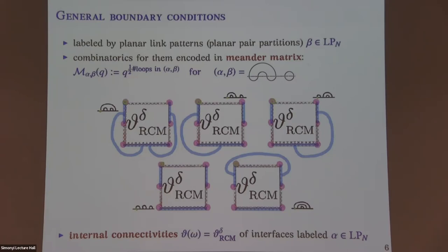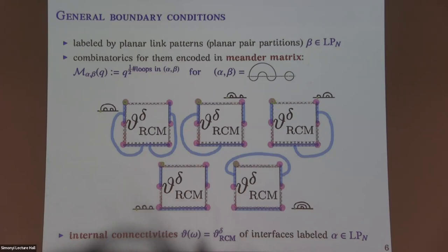The setup: I use combinatorial notation, α and β for inside and outside connections. I'm interested in probabilities of what's happening inside with different boundary conditions. That's going to be related to conformal blocks in CFT. The random inside connection θ̄ can take some number of possible values, indexed by planar pairings — I call them LP, link patterns. It's a finite set of indices.